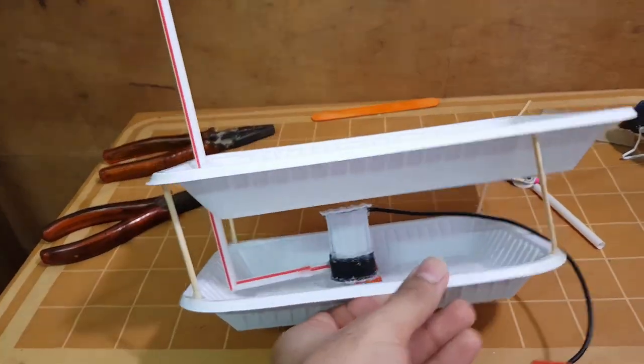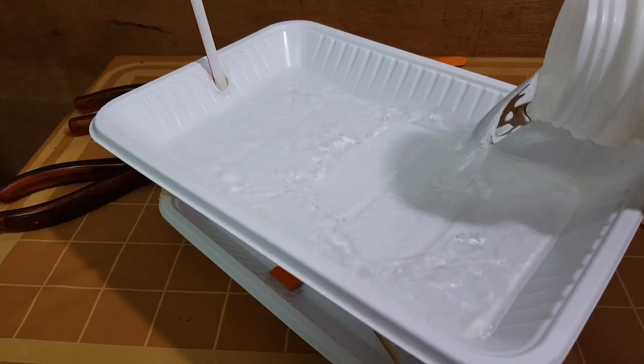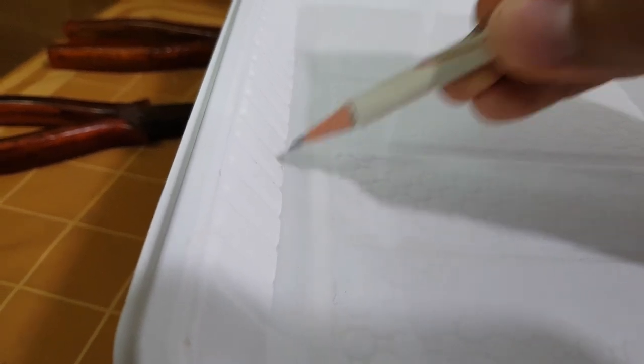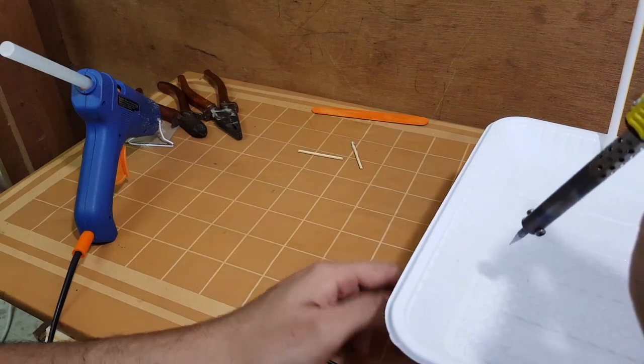When it's perfectly balanced, fill it with a desired amount of water. I guess this is enough. Now put a mark, remove the water, and dig a hole at the mark.